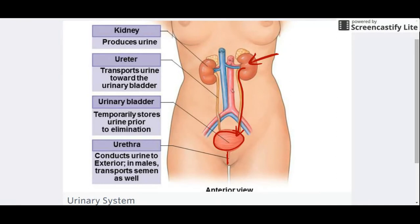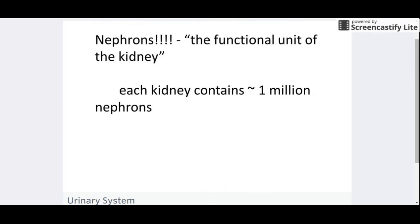So the most important vocab word in this unit is the nephron. The nephron is the functional unit of the kidney. Functional means the part that does the work, so this is the part that does all that filtering and cleaning. They're really small. Each kidney has about a million of these nephrons.